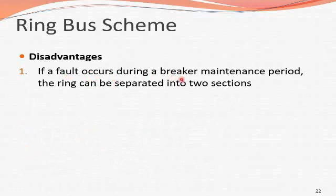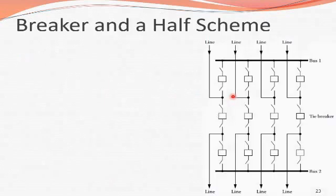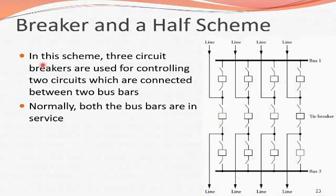If a fault occurs during a breaker maintenance period, the ring can be separated into two sections. The last scheme is the breaker and half scheme. We have bus 1 and bus 2, incoming lines, outgoing lines, a tie breaker, and associated breakers. In this scheme, three circuit breakers are used to control two circuits connected between two bus bars.